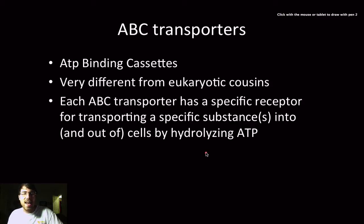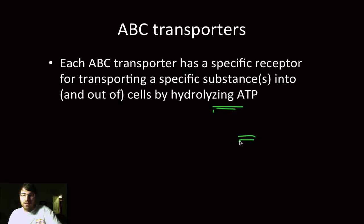Okay, ATP binding cassettes, otherwise called ABC transporters. If you've ever looked into eukaryotic ATP binding cassettes, these are completely different, very much different from what you'd see in bacteria because they're very specific receptors for transporting a specific substance, or substances, into and out of the cell by hydrolyzing ATP. Each ABC transporter has a specific receptor for transporting a specific substance into and out of the cells by hydrolyzing ATP. I think that's a repeat from the last slide, but nevertheless, that's the main point that you want to drive home here.